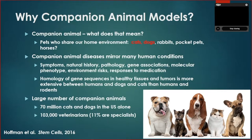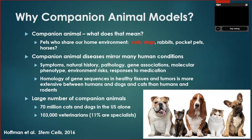First of all, what do we mean by companion animals? They are essentially the pets that live in our homes and share our environment. I'm focusing on cats and dogs, though companion animals can include rabbits, pocket pets, and even horses. Our focus on cats and dogs is important because they develop many chronic diseases similar to people — the same clinical symptoms, pathology, and genetic changes.